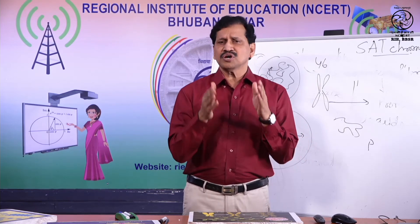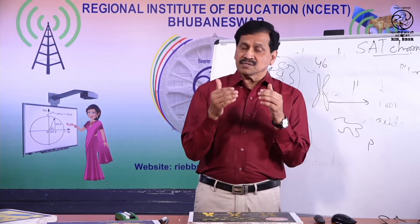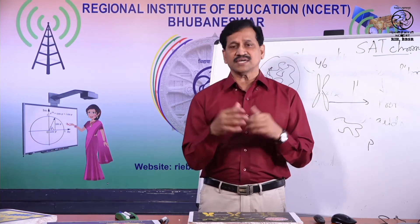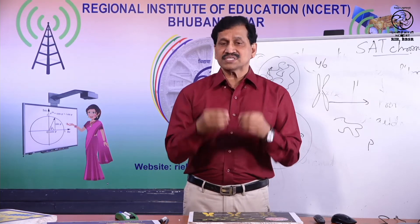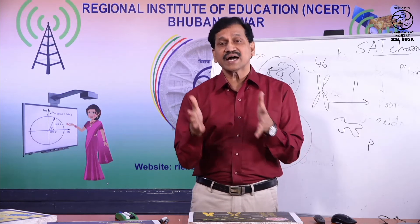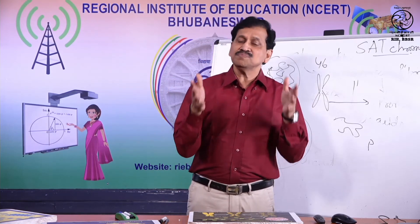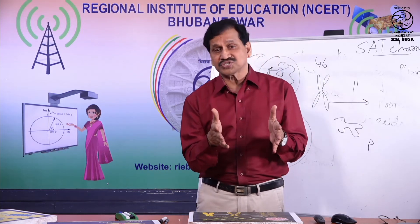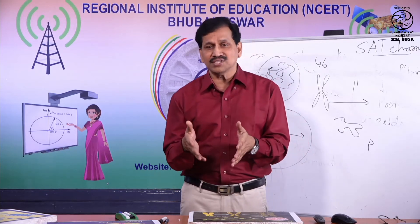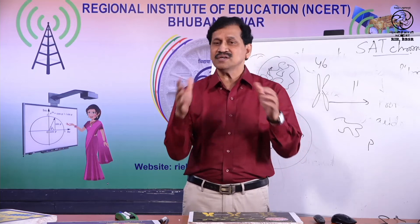The number of secondary constrictions in a particular chromosome of a species may be one or more, but is constant. Because of this, and because their position is also constant for a particular chromosome of a species, secondary constrictions help in identifying chromosomes. For example, if my first chromosome has two secondary constrictions, your first chromosome also has two secondary constrictions. We have mapped all chromosomes as to which chromosome has how many secondary constrictions and at what position, so we can identify whether it is chromosome 1, chromosome 17, or chromosome 21.